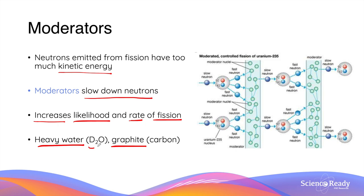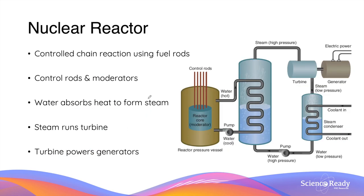We usually use heavy water and graphite as materials for moderators. Heavy water is where the normal hydrogen-1 isotope is substituted by hydrogen-2 isotopes, also known as deuterium, so the formula for heavy water is D₂O instead of H₂O. Graphite is a material made from just carbon atoms. Both substances are able to slow down neutrons and increase the efficiency of nuclear fission. Understanding controlled chain reactions is important because they are used in nuclear reactors, where controlled chain reactions produce energy from nuclear fission in an efficient and sustainable manner — made possible through the use of control rods and moderators.